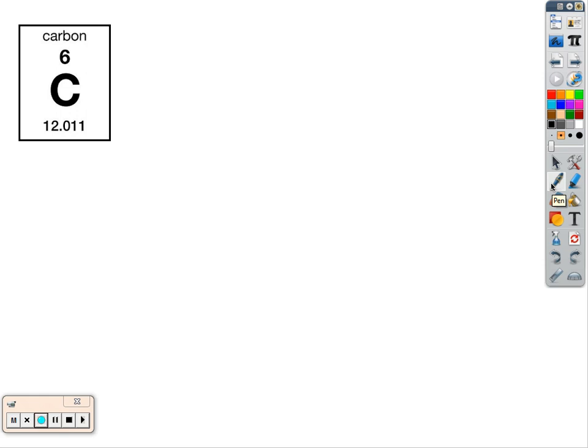Start off with the Bohr model for carbon. In the periodic table box, there will be two numbers. There will be a whole number, a six in this case, and there will be a number with a decimal point and values after it. That is going to be the atomic mass.